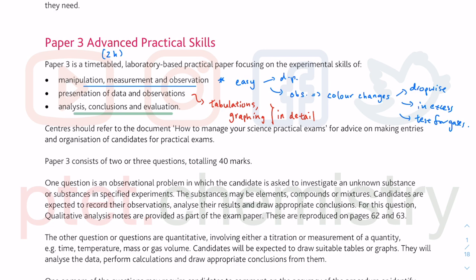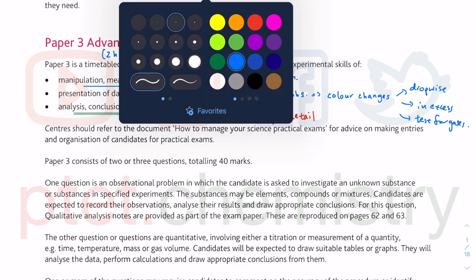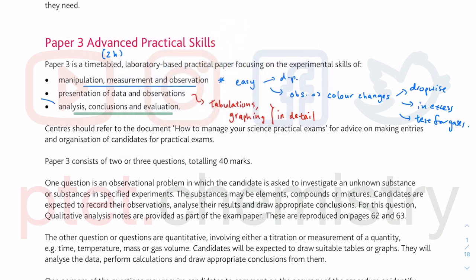The last bit — analysis, conclusion, evaluation — these things are to do with error analysis. Very commonly asked. You can have a look at my error analysis short tutorial videos. You can be asked on the identities: what are the identities of the cations, anions, all the gases present; evaluations of whether it's accurate or not.